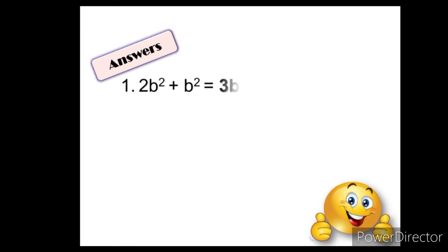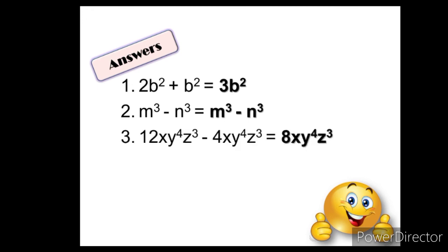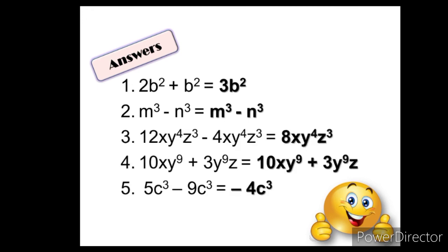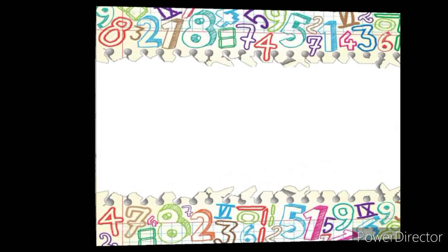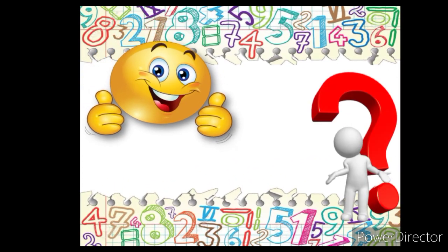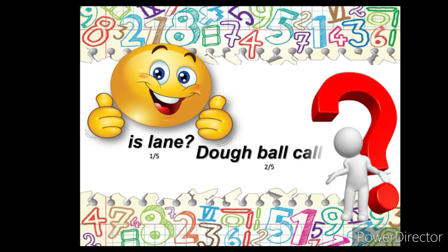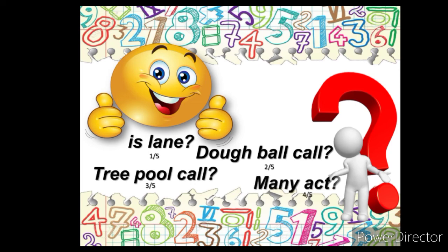Here are the answers. What is your score? Did you slain an item? Double call? Triple call? Many at? Or savage. Comment down the code of your score.